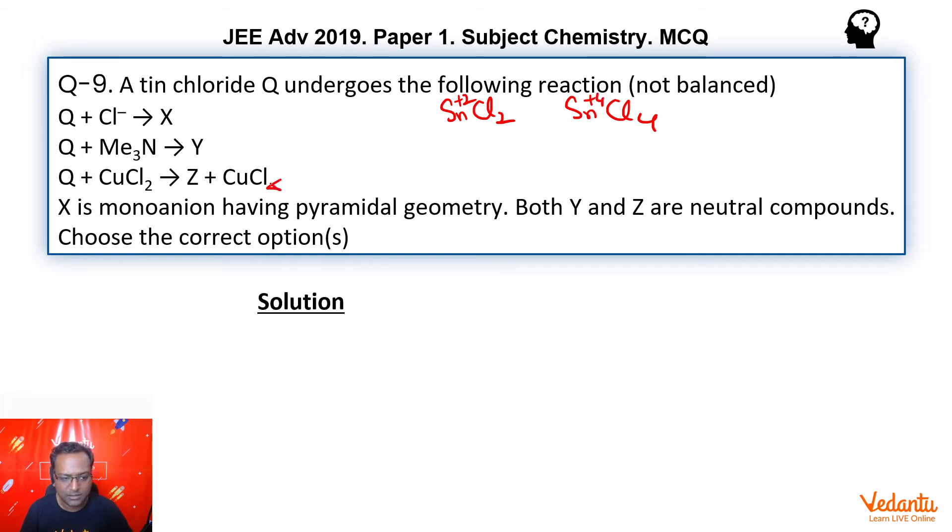This reaction will essentially tell us whether it is +2 or +4. As you can see, copper is going from +2 to +1, meaning copper is undergoing reduction. That means Q to Z is essentially oxidation. So Q has to be +2, Z has to be +4, and from here we conclude that Q is SnCl₂.